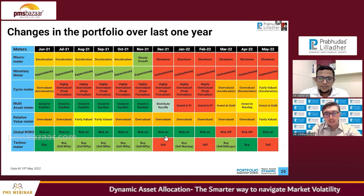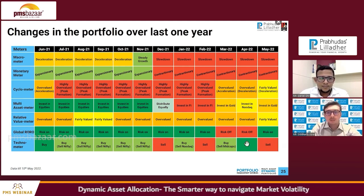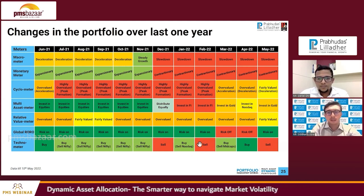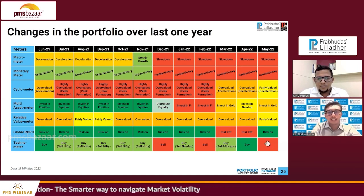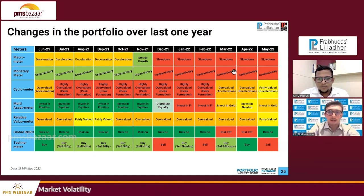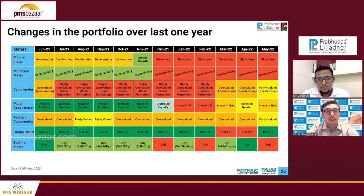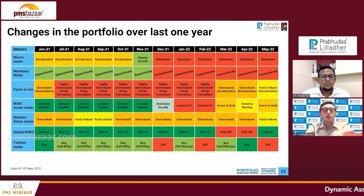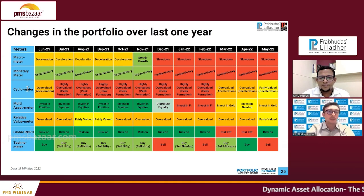The Technometer has been giving mixed signals, but since February it has been a sell, with a brief buy signal for mid-caps in April, then sell again in May. The key is not looking at any of these indicators in isolation. We have base indicators — macro, monetary, and cyclo — supported by momentum, relative value, risk-off, and technometers. These tools help us navigate this difficult period with a fair amount of ease.